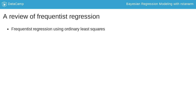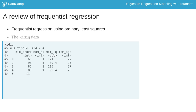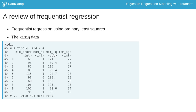For examples, I'll be using the KidIQ data from the rStanArm package, a package for Bayesian applied regression modeling which you'll be introduced to in the next video and used throughout this course. This dataset includes scores of kids on an IQ test along with the mother's IQ, age, and whether or not she finished high school.